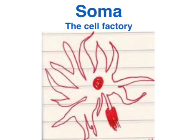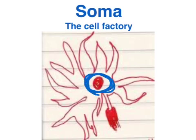So the soma, or the cell body — in the middle of that we've got the nucleus, which contains your genetic material, i.e. your DNA. The soma itself I like to think of as a cell factory, because it actually produces the proteins required for the dendrites and the axon terminals.